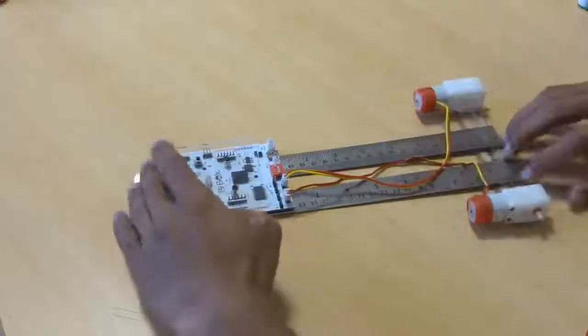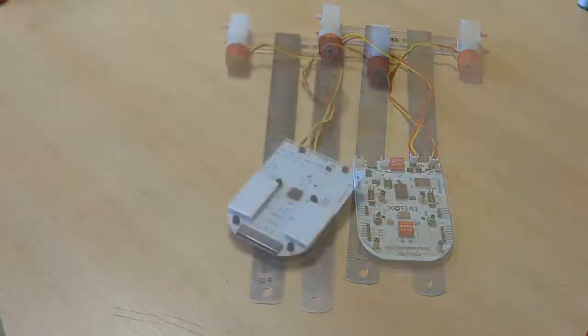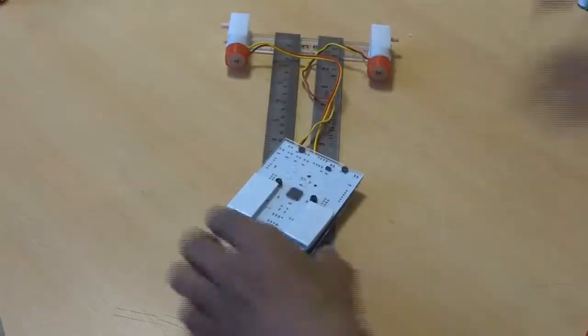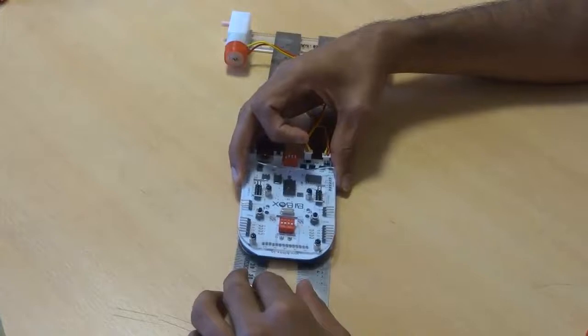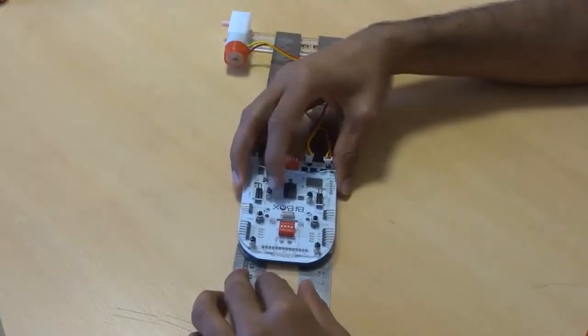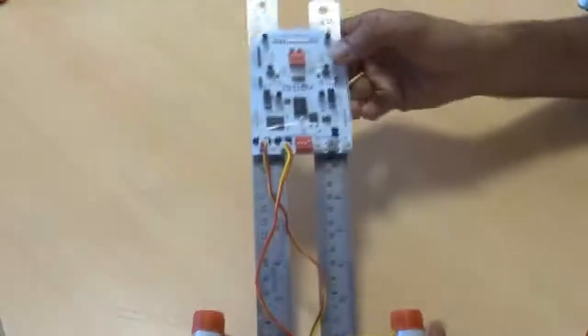And using a double-sided gum tape again, attach the B-box. Place it right here. Just make sure this is top and up.